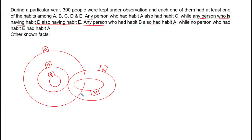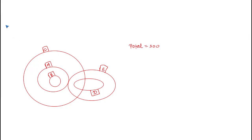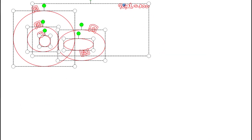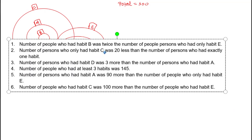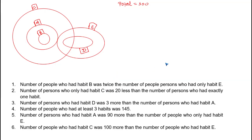Total 300 people are there. We no longer need the paragraph description, so let's delete it. If required, we can go back and re-read it. Now let's concentrate on the additional statements.